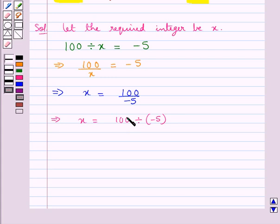So in this case 100 has a plus sign and 5 has minus sign. So we divide 100 by 5 which gives us 20 and we put a minus sign with 20. This gives the quotient of 100 divided by minus 5.